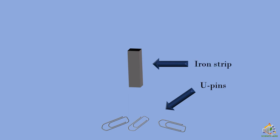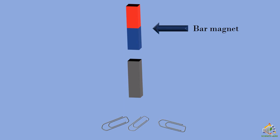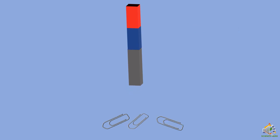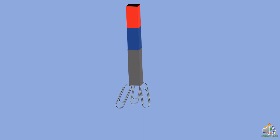Here we have some U-pins and an iron strip. If you bring that iron strip near the U-pins, will it attract them? The answer is no, because it is just iron — not a magnet. So let's make a magnet out of that iron strip using a bar magnet. Just hold the bar magnet on top of the iron strip, so the iron strip will now attract the bar magnet. As you can see, if we bring the iron strip near the U-pins, it attracts them towards itself.